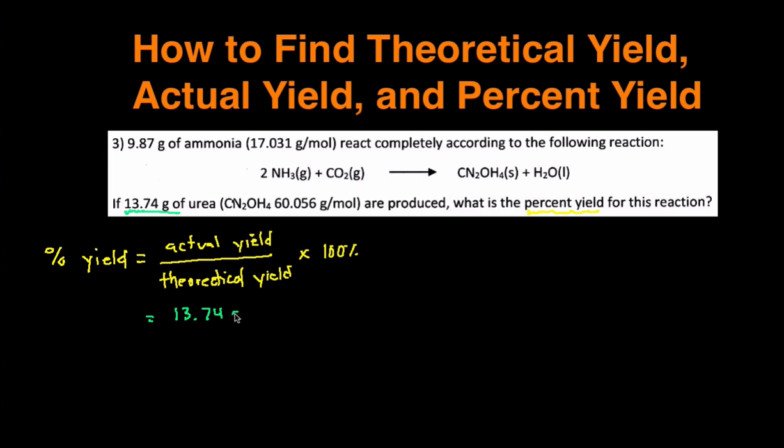And then for the theoretical yield, we have to do stoichiometry. We have to take the 9.87 grams of ammonia and then convert it to grams of urea. So we're essentially doing a gram-to-gram conversion, and that's what we're going to do here.